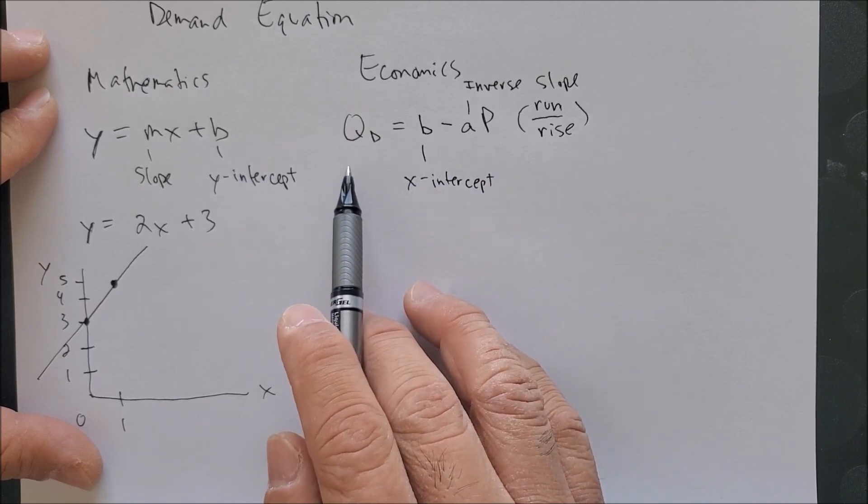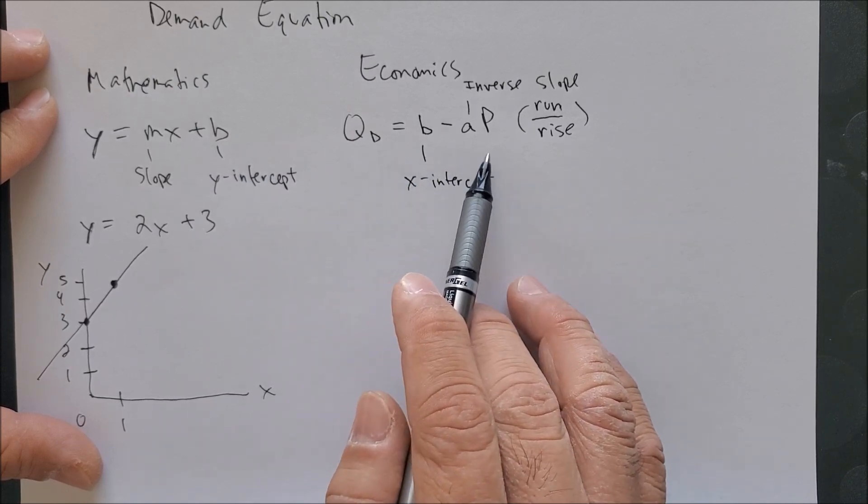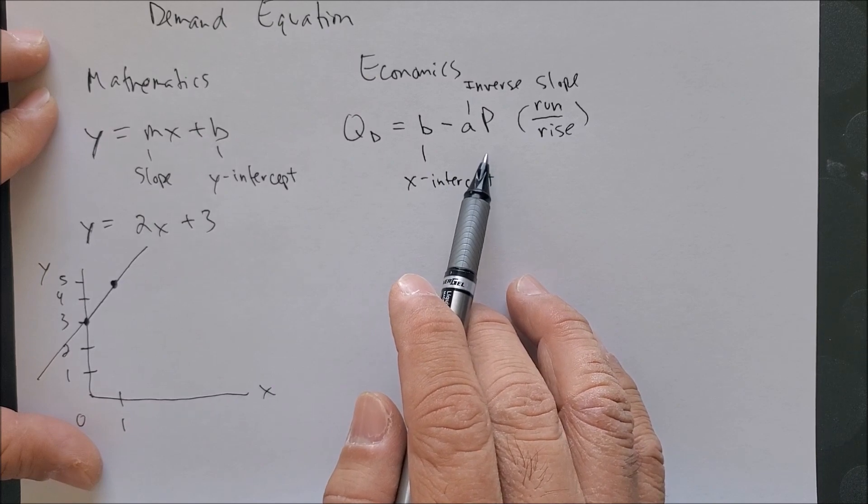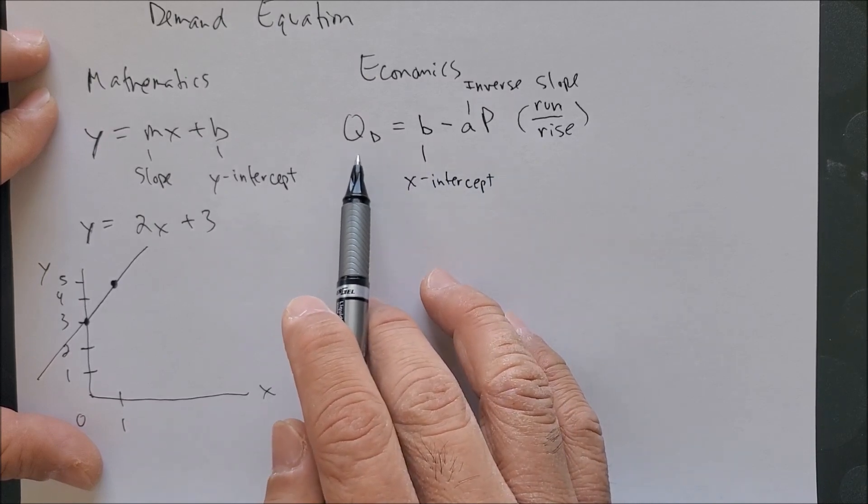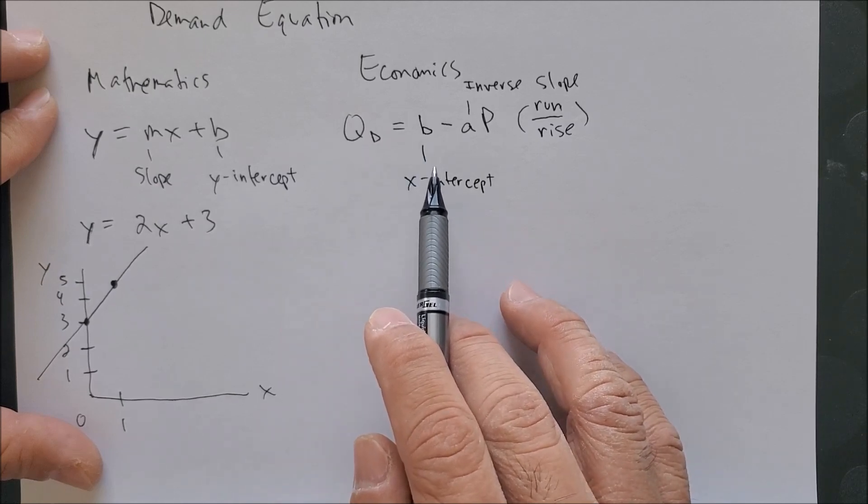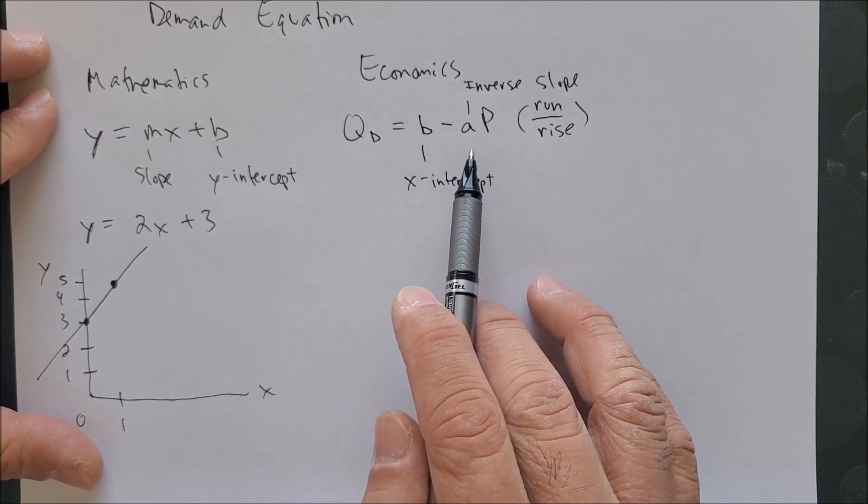How many you buy depends on the price of that good. And that's why we have q sub d as a function of the x-intercept minus the inverse slope of price.